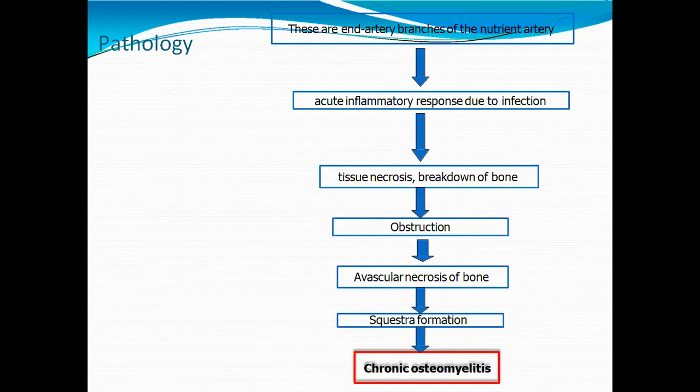This leads to sequestrum formation and chronic osteomyelitis. So what does sequestrum mean? The damaged necrotic portion is permanently separated from the remaining viable bone — that permanently separated dead portion of the bone is called sequestrum, and this characterizes chronic osteomyelitis.